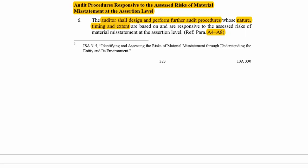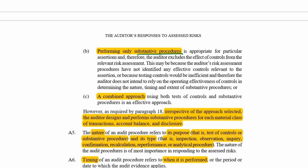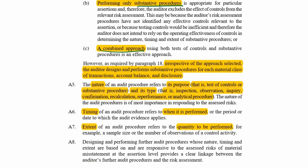For audit procedures responsive to the assessed risks of material misstatement at the assertion level, we have to design and perform further audit procedures whose nature, timing, and extent are responsive to those risks. Paragraphs A4 to A8 provide guidance. A4 says you must determine the audit approach: only tests of controls, substantive procedures, or a combination of the two.